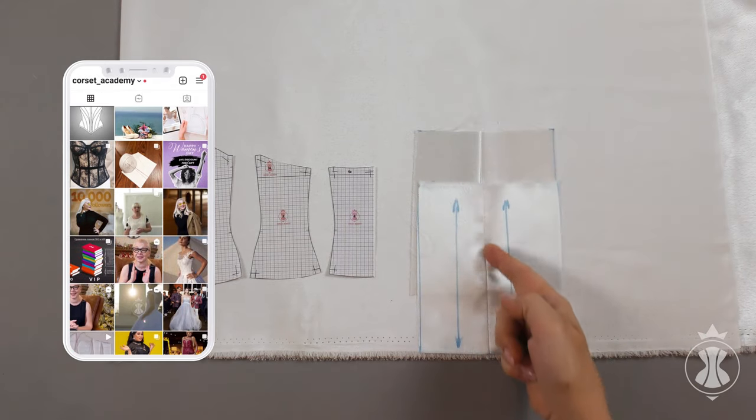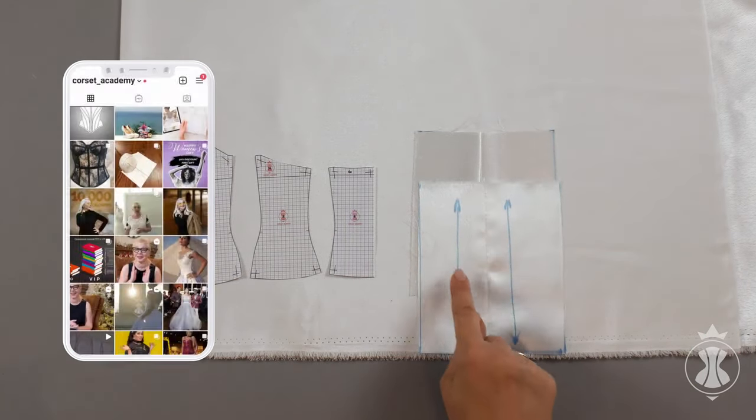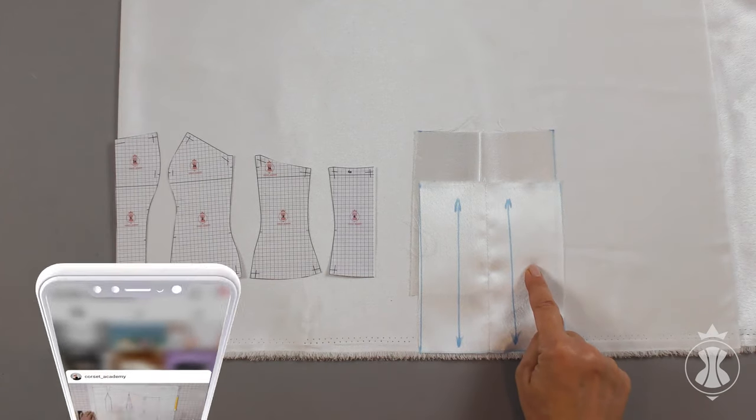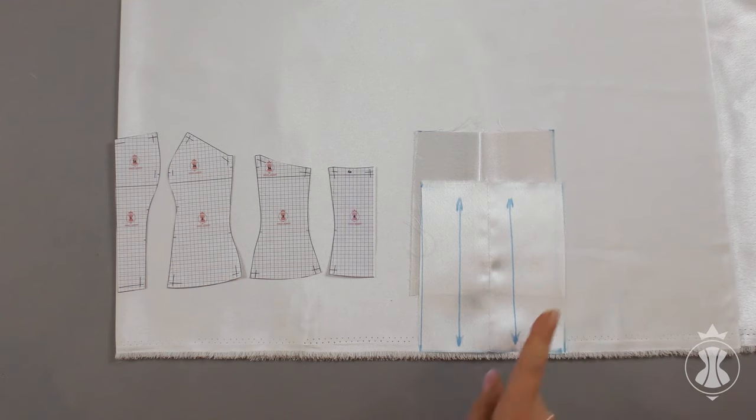By the way, you can compensate slight stretching along the crosswise grain with correct duplication of your main fabric if the test of your fabric shows that the curves should be along the lengthwise grain. I will talk about it in the next tutorials.